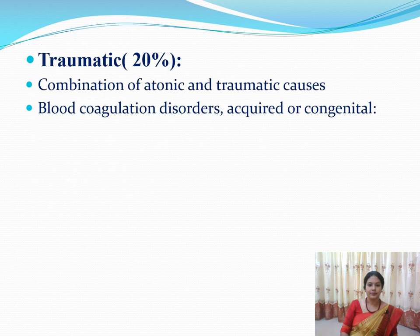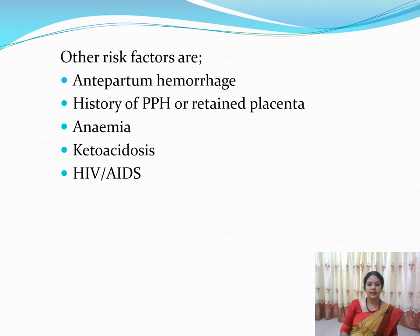The third T — Trauma — accounts for 20% of postpartum hemorrhage. Sometimes atonic and traumatic causes occur together. The fourth T — Thrombin — includes von Willebrand's disease, congenital clotting factor deficiency, or any acquired or congenital coagulation disorders that may lead to profuse bleeding.